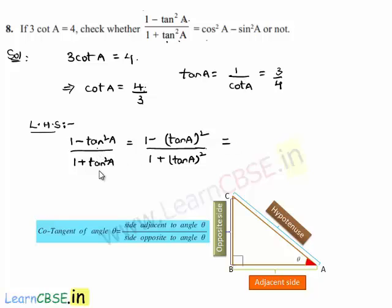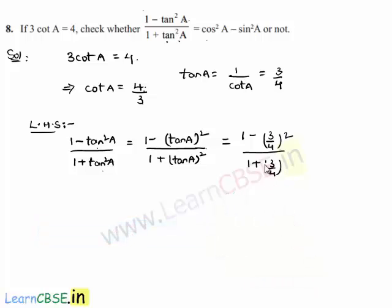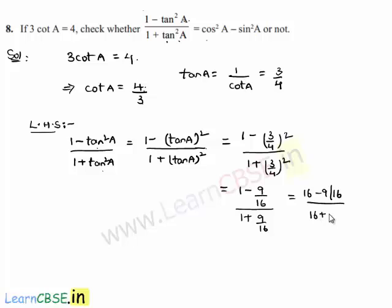Now, (1 minus tan square a) by (1 plus tan square a) equals (1 minus 3/4 whole square) by (1 plus 3/4 whole square), which is (1 minus 9/16) by (1 plus 9/16), equal to (16 minus 9)/16 divided by (16 plus 9)/16. The 16s in the denominator cancel, giving 7 by 25. Therefore, LHS equals 7 by 25.